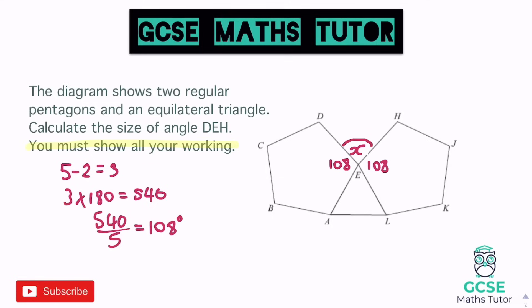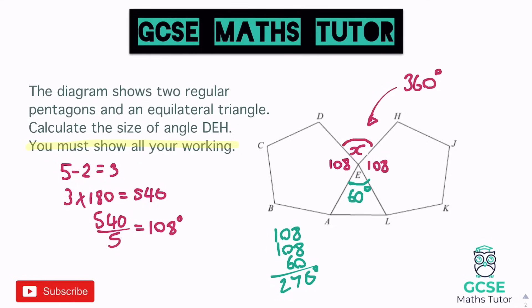I can put in 108 and 108 at this corner. The reason I've chosen this corner is because they're all slotted together - we're looking at angles around the point, and the total of all these angles is 360 degrees. The remaining angle is inside the equilateral triangle. For an equilateral triangle we don't need to show working - that angle is 60 degrees. So 108 plus 108 plus 60 gives us 276 degrees. Then 360 take away 276 leaves us with 84 degrees as the missing angle.